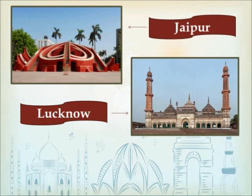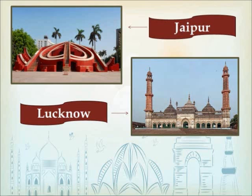Next is Jantar Mantar, which is in Jaipur. Maharaja Jai Singh II built five Jantar Mantars in five different cities and towns: Jaipur, New Delhi, Ujjain, Mathura, and Varanasi. The largest of these observatories is in Jaipur. Next is Bara Imambara, which is in Lucknow.